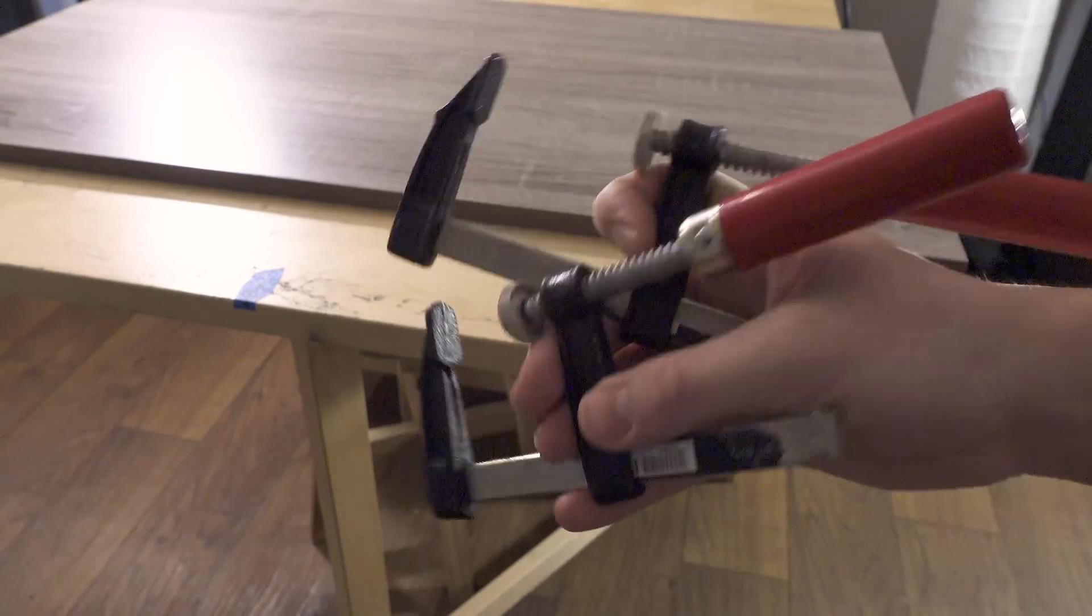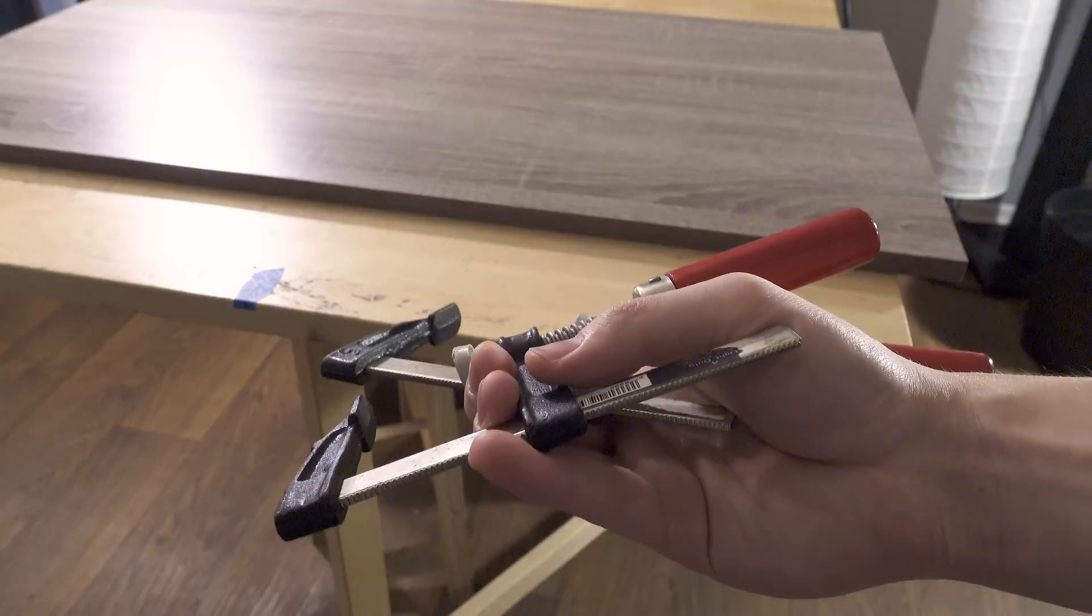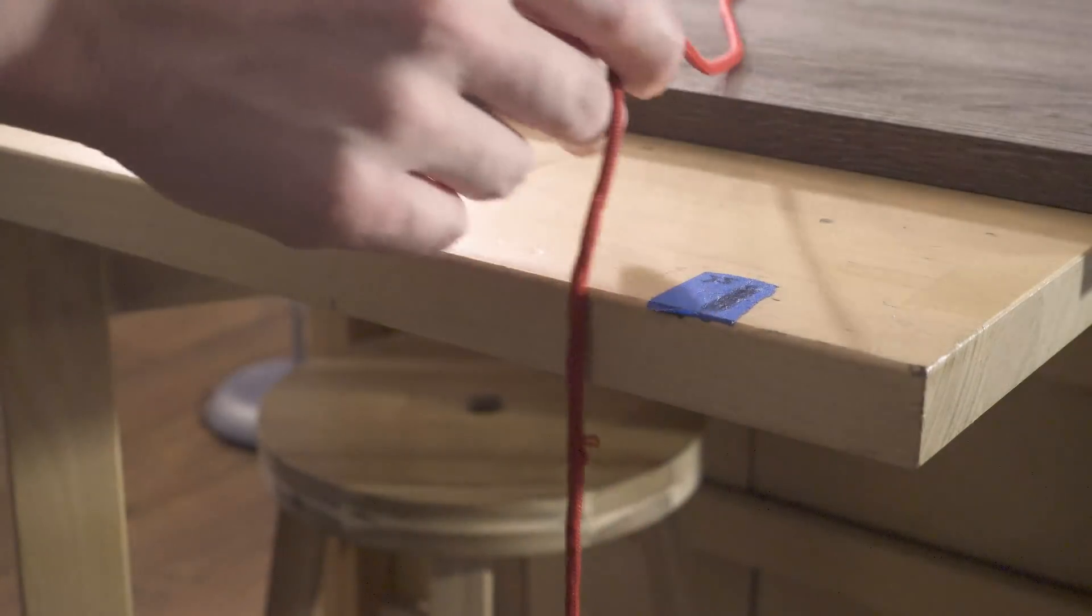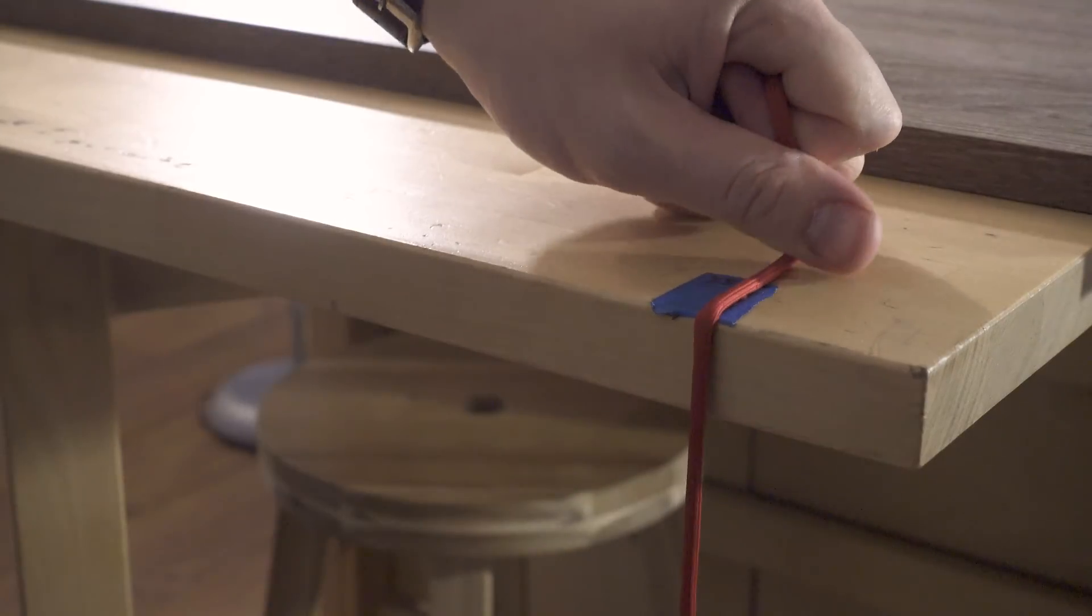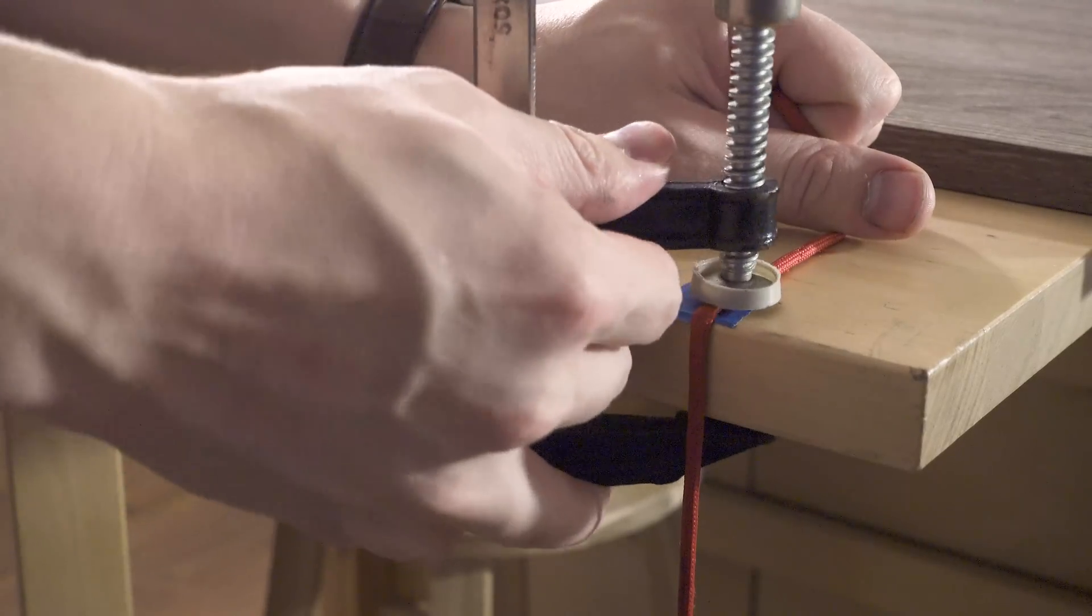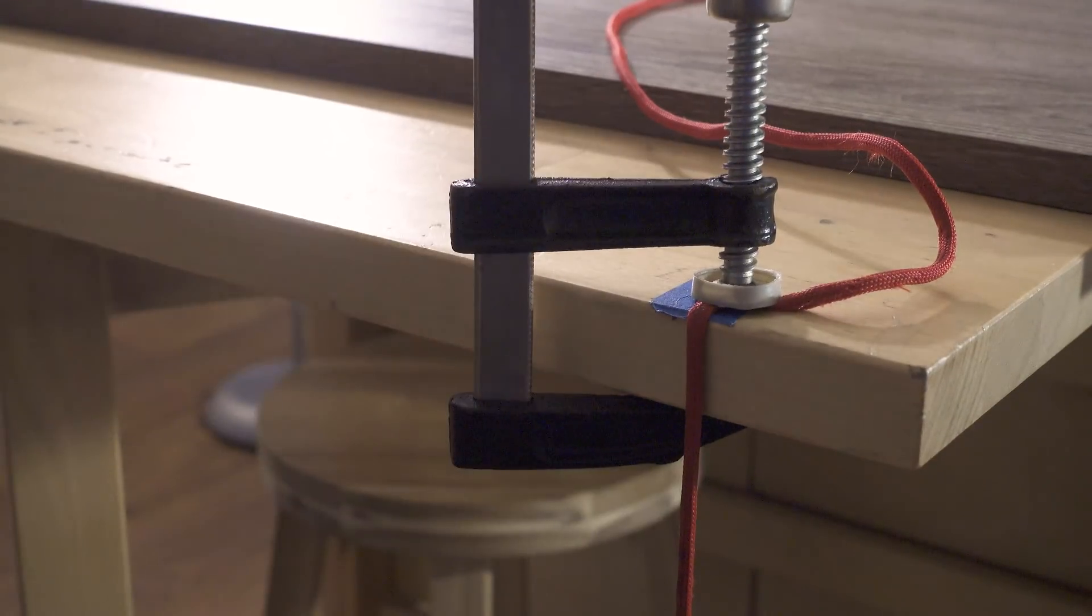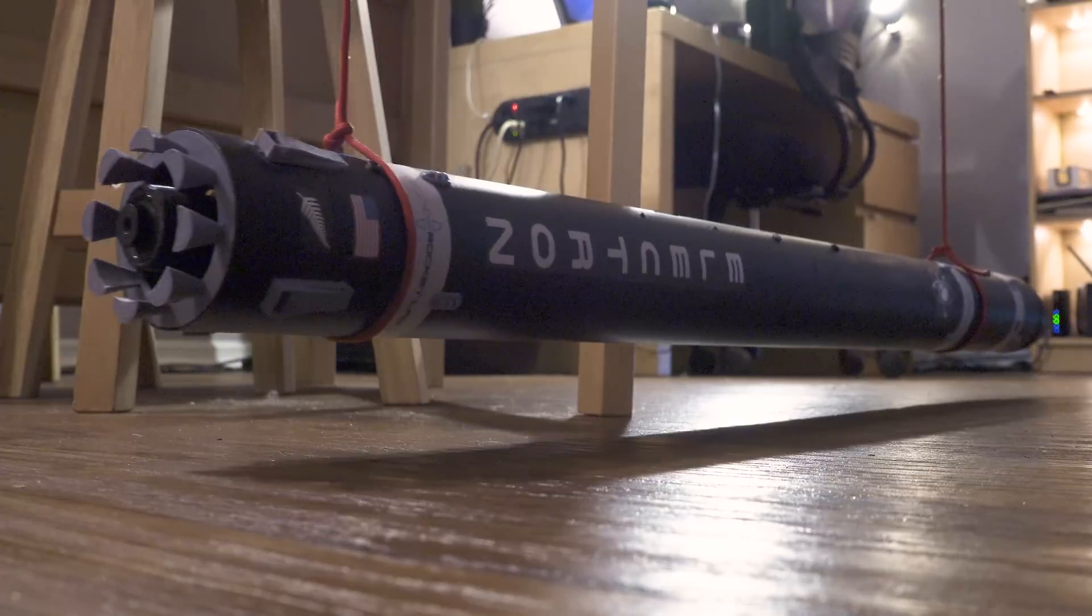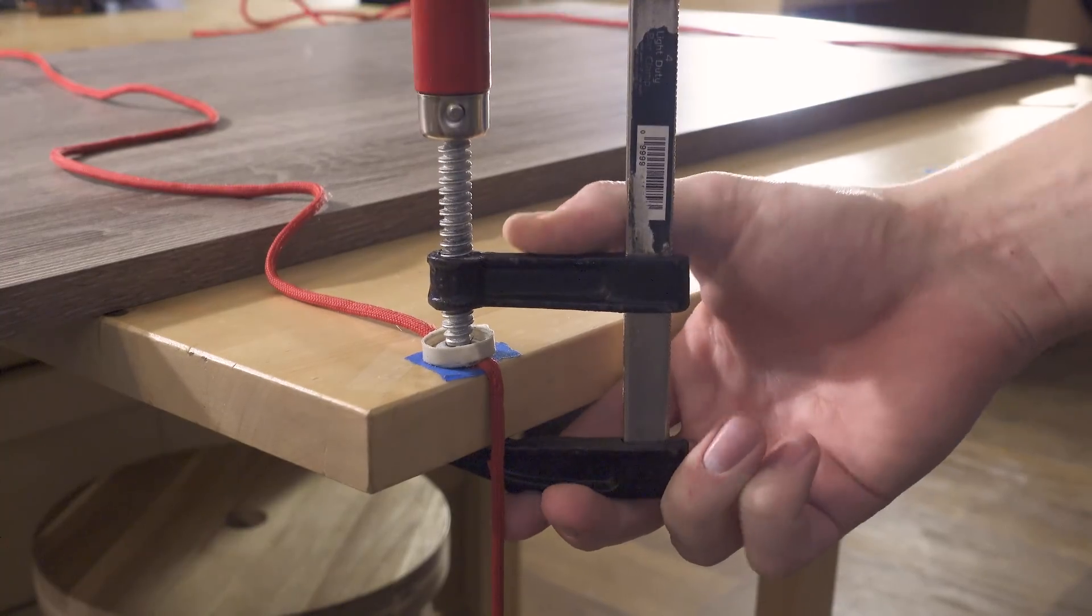To hang the rocket, we'll be clamping the strings down to the table using these clamps. I'll push the string against the table at the hang points that we marked, and then slowly pull the rocket up off the ground just a few inches. Then I'll clamp the string to the table to secure it in place. Now we'll do the exact same thing for the other side of the rocket. Make sure the rocket is about parallel with the floor, and then clamp it in place.